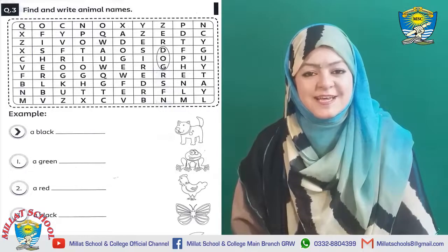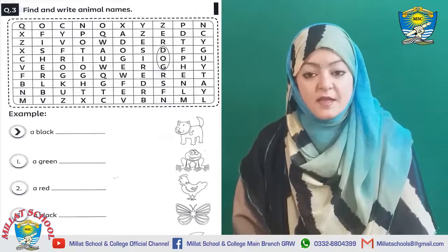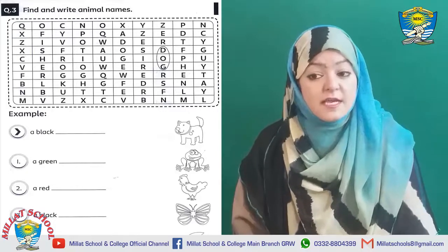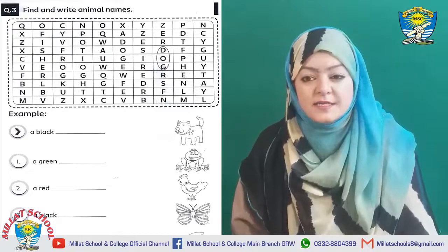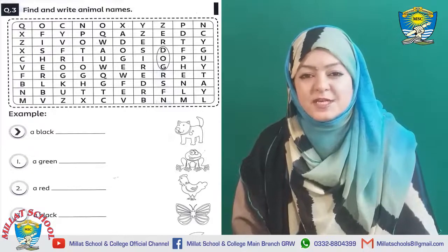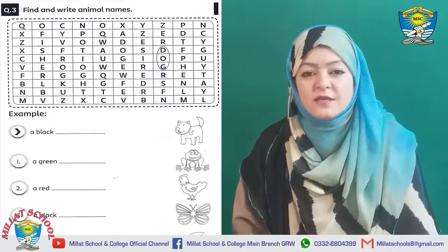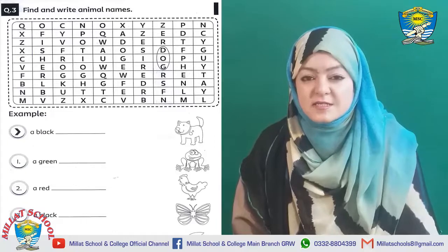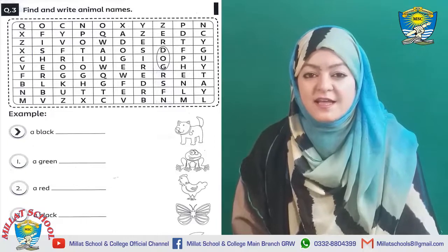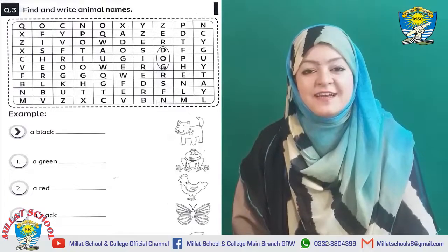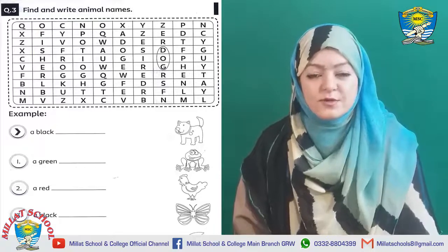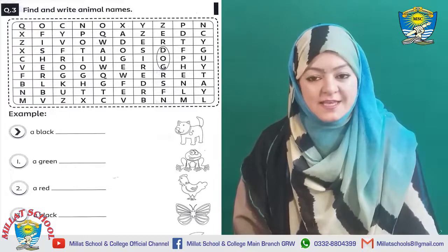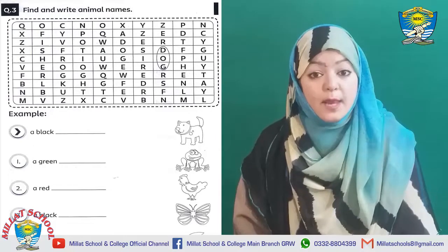बहुत मज़ा आएगा इस exercise को solve करने में और यह मेरे तमाम प्यारे बच्चों की favorite exercise है। Next, कौन सा animal हमें नजर आ रहा है? A red — Yes, tell me, किसकी तस्वीर है यह? Hen! A red Hen. Hen के spellings भी आप उपर से ढूंढ के यहाँ पर लिखेंगे।